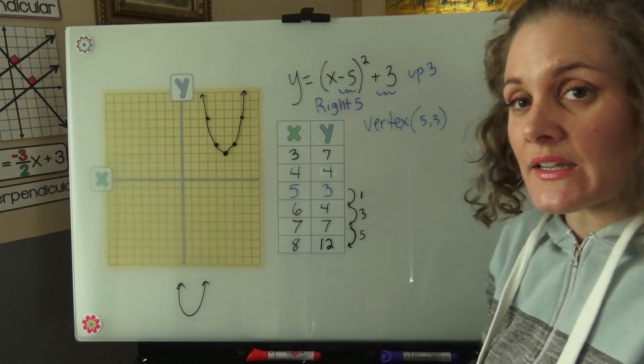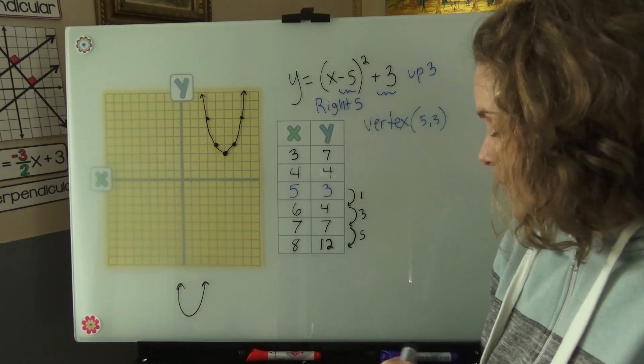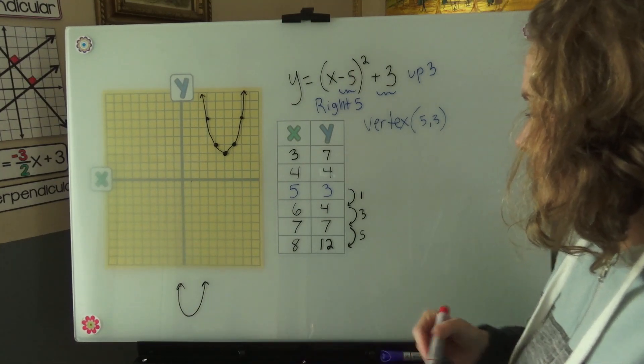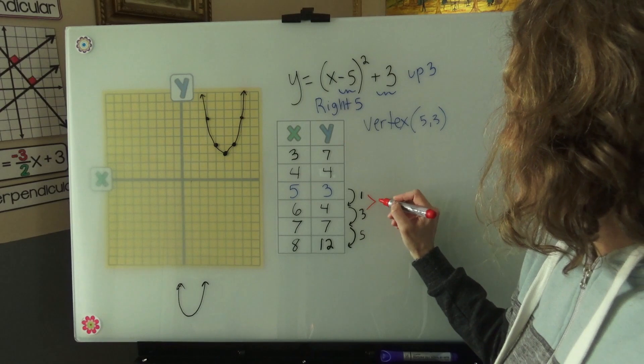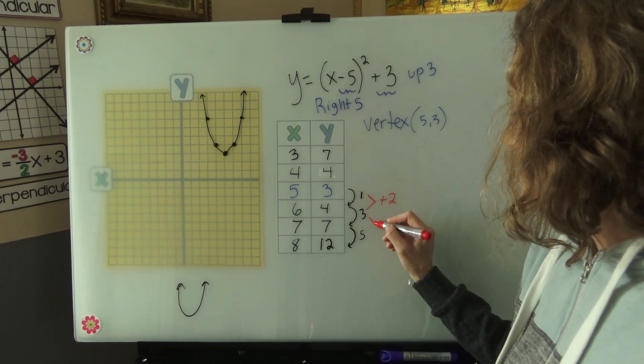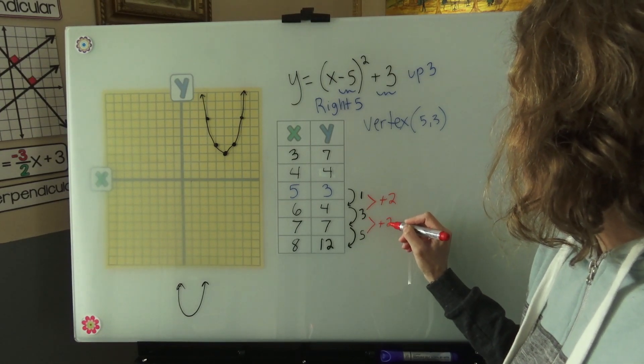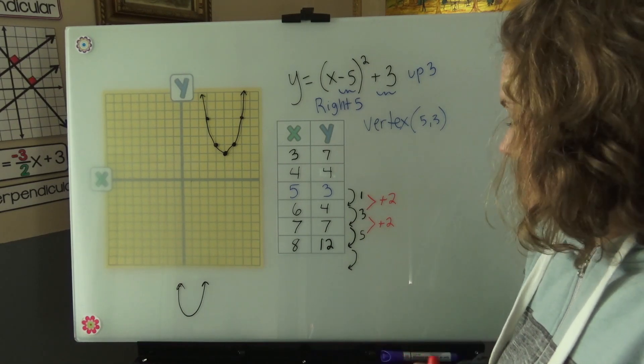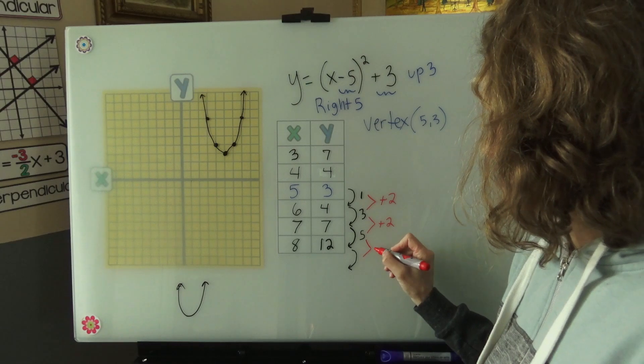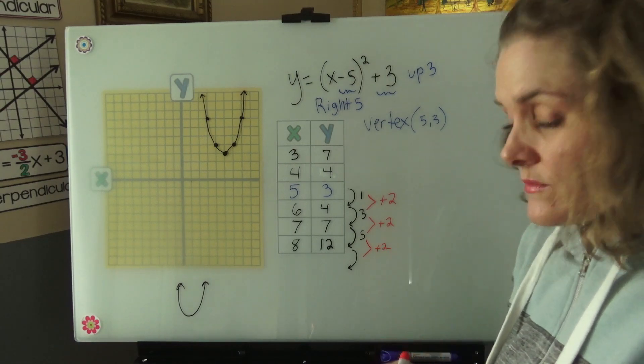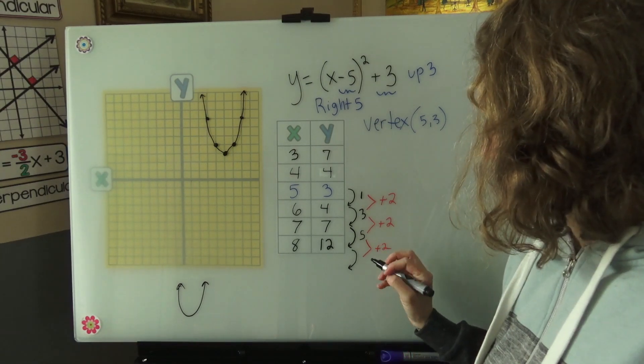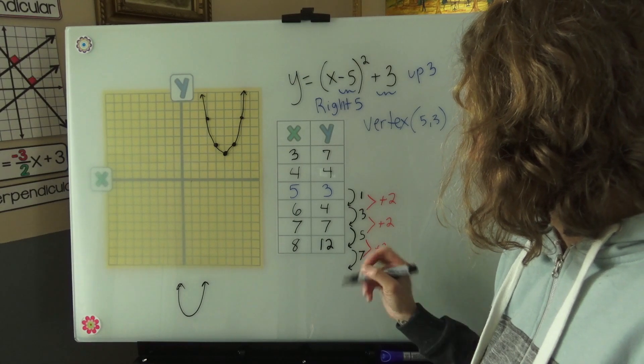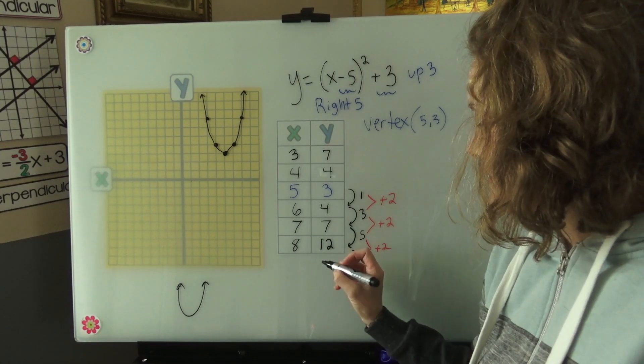Now if we look at the second difference of these y values, we'll see plus 2 plus 2. What would be our number, our next number, to make another plus 2 here? 7. So we know that we'd go up 7. 12 plus 7 is 19.